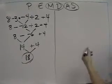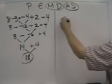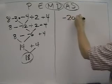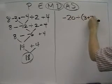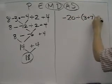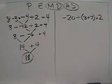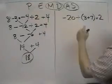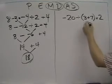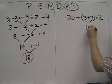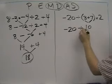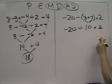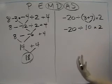One more example: we've got negative 20 divided by 3 plus 7 in parentheses times 2. Well, first thing we're going to do is parentheses. So 3 plus 7 is 10.